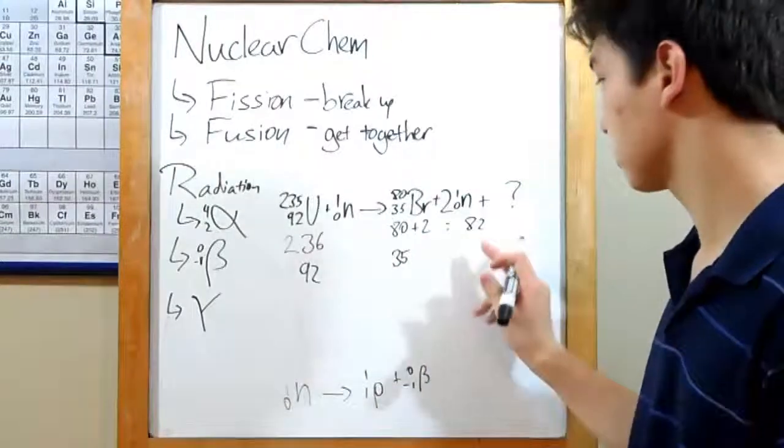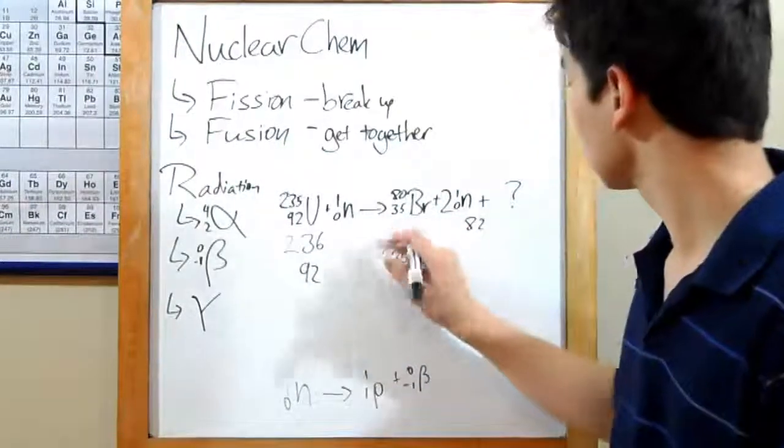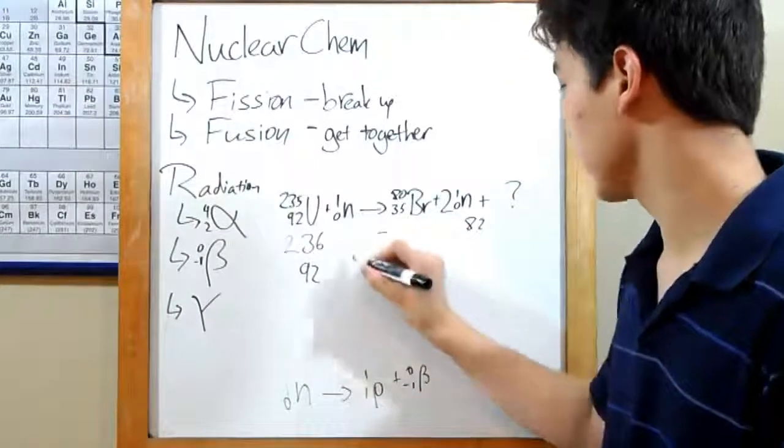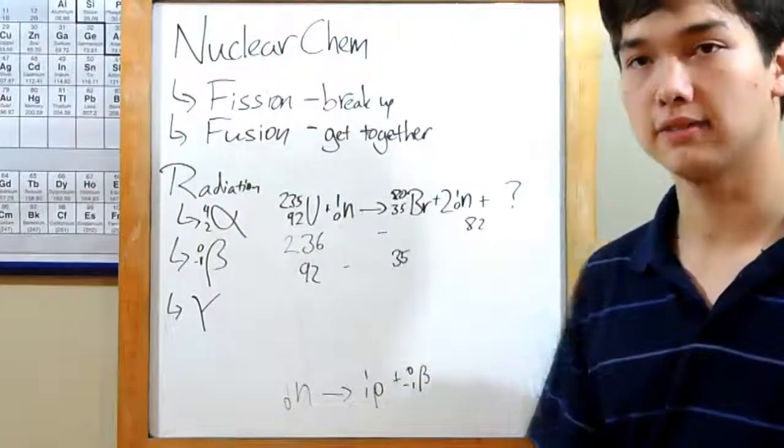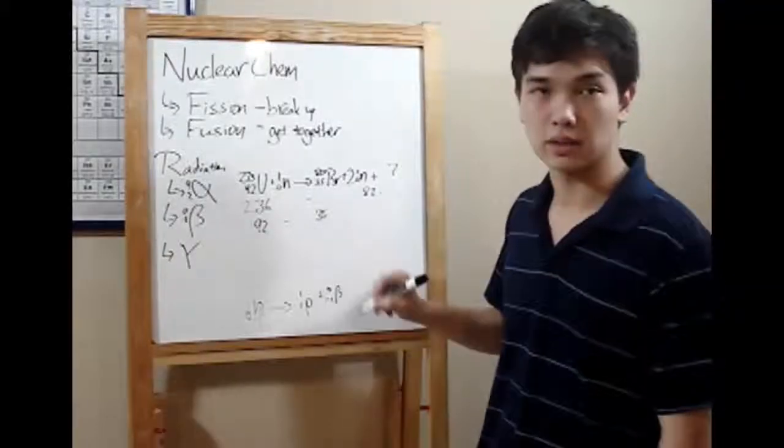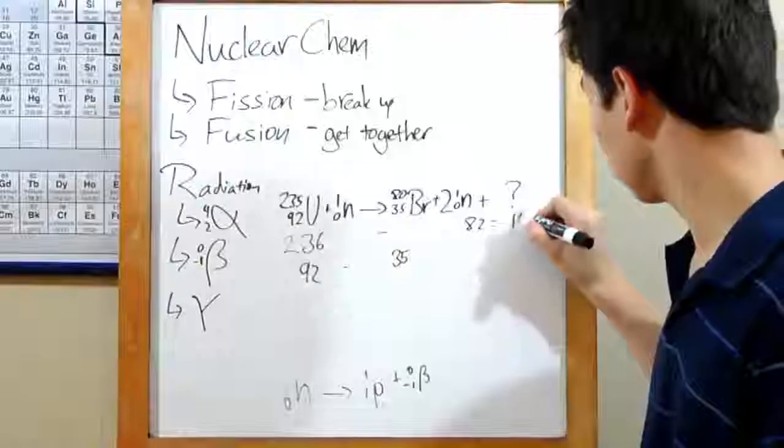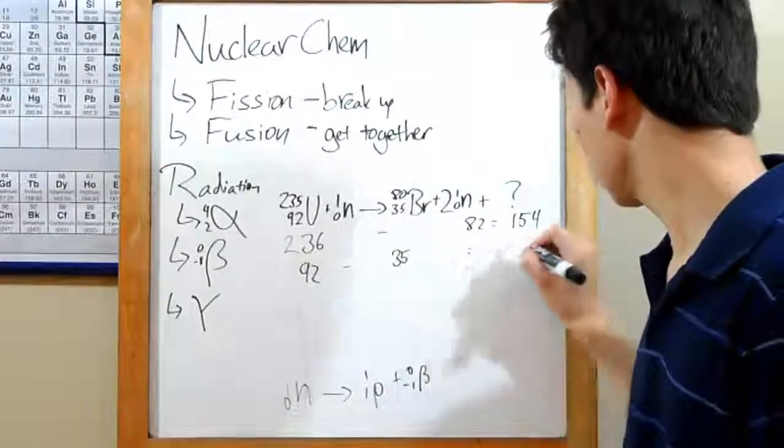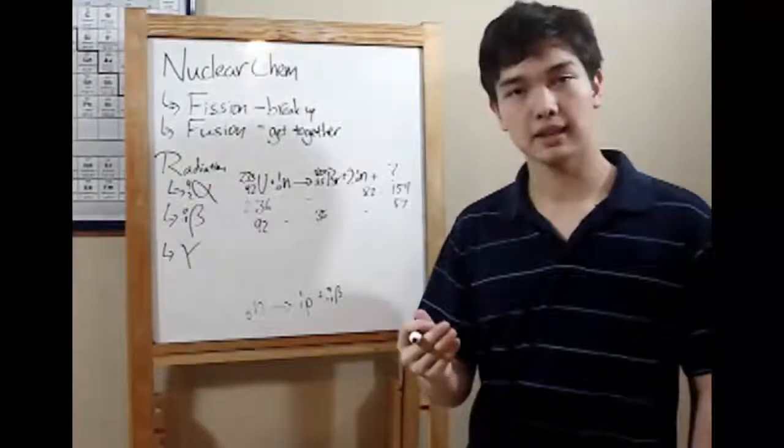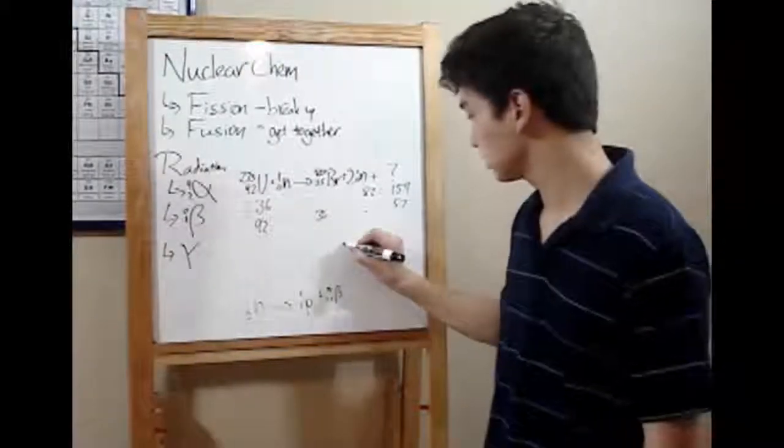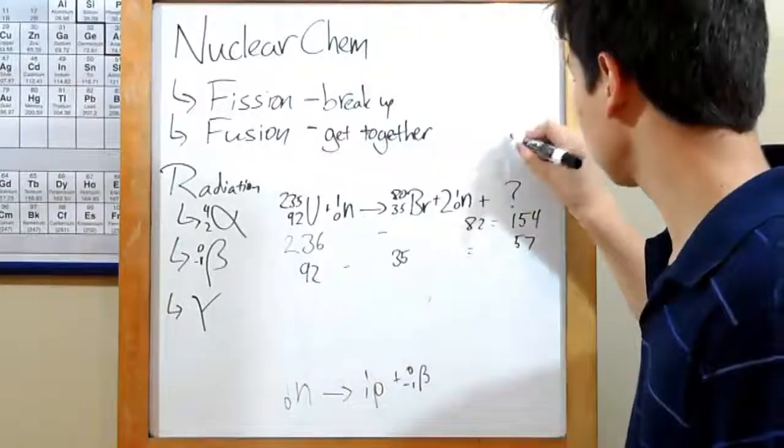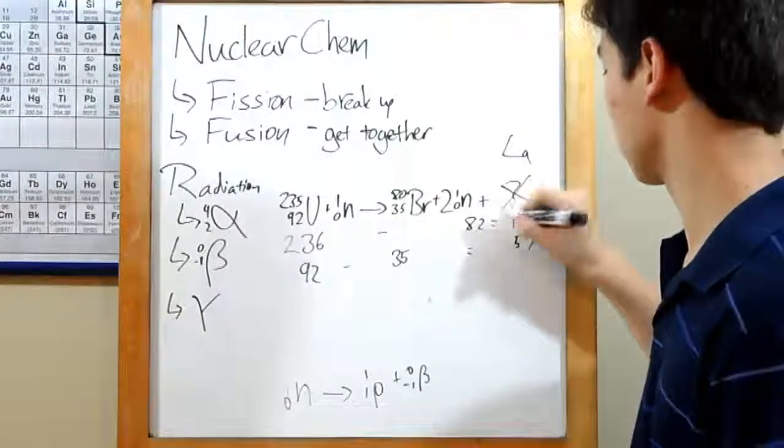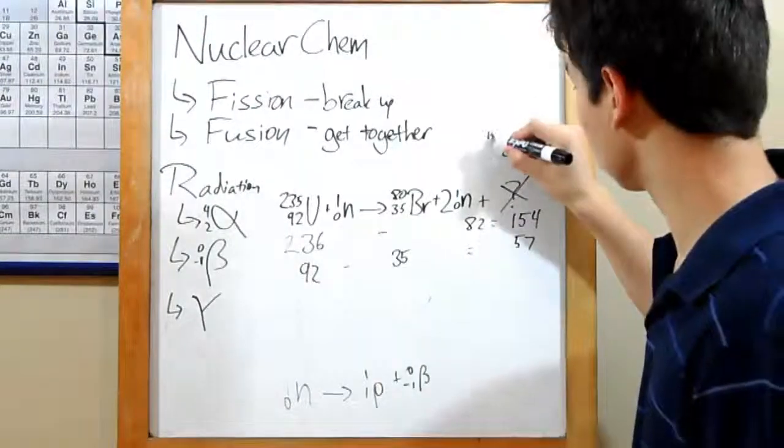Now, we just need to subtract. 236 minus 82 and 92 minus 35. Doing that all out will give us an atomic weight of 154 and atomic number of 57. Remember that atomic number determines your element. So atomic number 57 on the periodic table is lanthanum, and so we can just get rid of our question mark and write our numbers in.